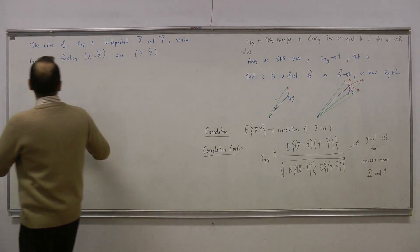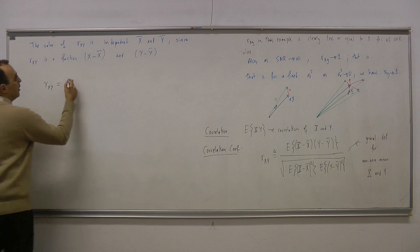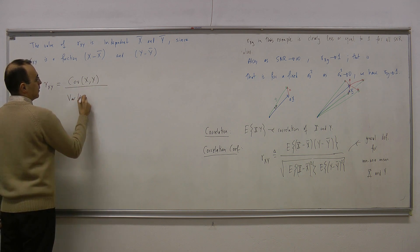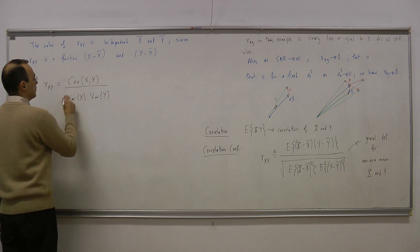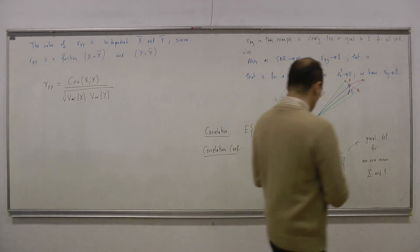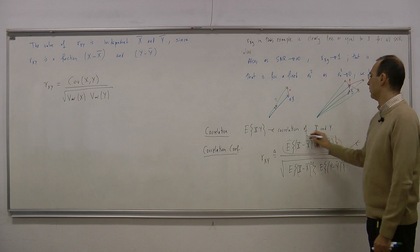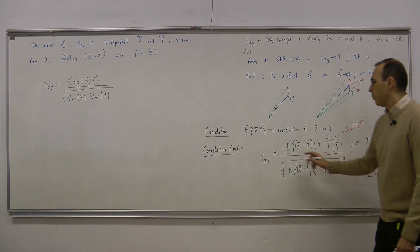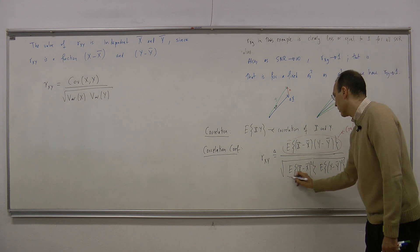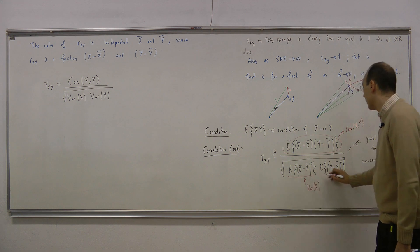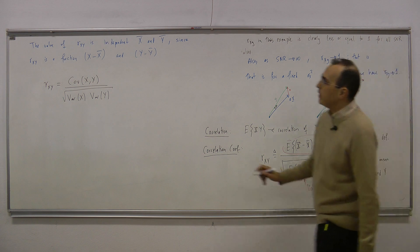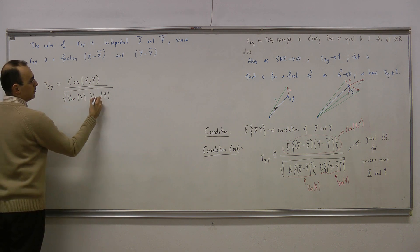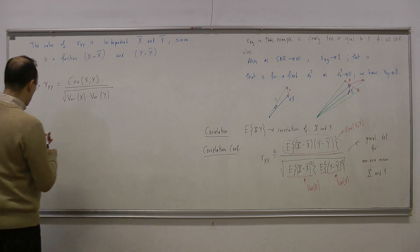We can also write rxy using covariance notation. The numerator E[(x - x_bar)(y - y_bar)] is the covariance of x and y, denoted Cov(x,y). The denominator involves the variance of x and the variance of y. So rxy = Cov(x,y) / sqrt(Var(x) * Var(y)).